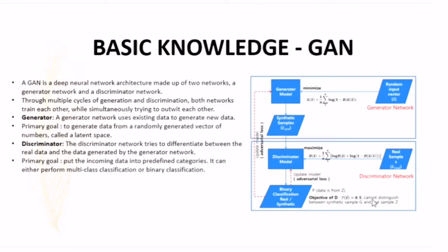We will talk about the proposed method, but before that, we will discuss the basic knowledge. The basic knowledge that you need to know is about GAN. GAN is a deep neural network architecture made of two networks: a generator network and a discriminator network. Through multiple cycles of generation and discrimination, both networks train each other while simultaneously trying to outweigh each other.